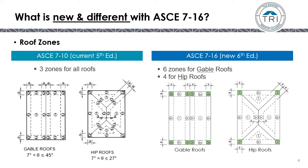Another difference with ASCE 7-16 are the individual roof zones located on a hip and gable roof. In the previous standard there were three zones for all roofs. In the new 6th edition manual, there are six different zones for gable roofs and four different zones for hip roofs.